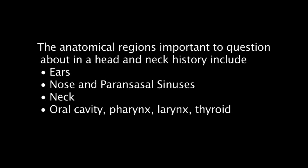The anatomical regions important to question about in a head and neck history include: 1. Ears, 2. Nose and paranasal sinuses, 3. The neck, which includes the oral cavity, the pharynx, the larynx, and the thyroid. Now let's look at some focused histories for conditions of the head and neck.